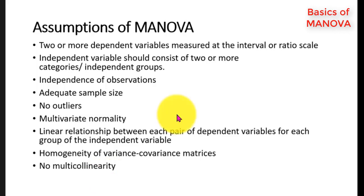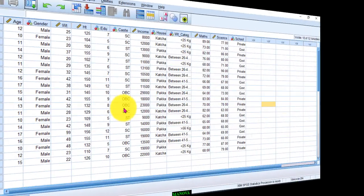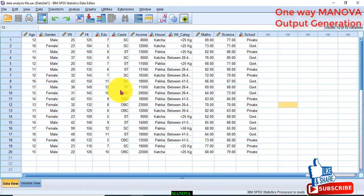Now, assuming that all the assumptions of MANOVA are satisfied, we will see how to perform one-way MANOVA using SPSS. So, let's do it in SPSS. In order to perform one-way MANOVA, let me describe the data file first.